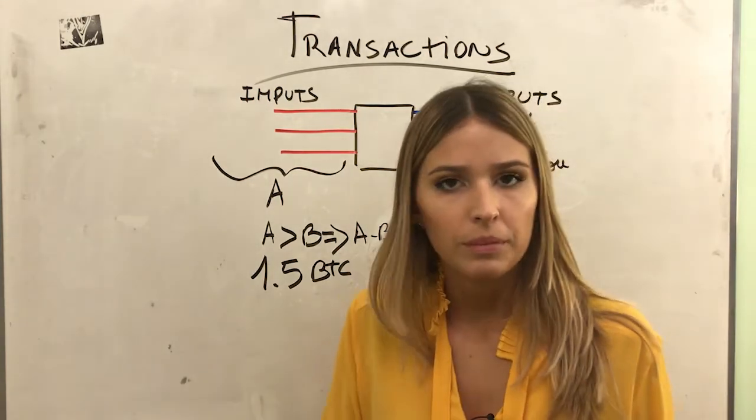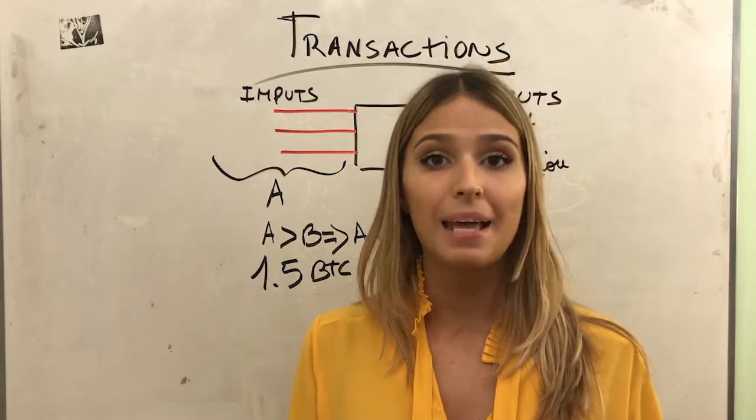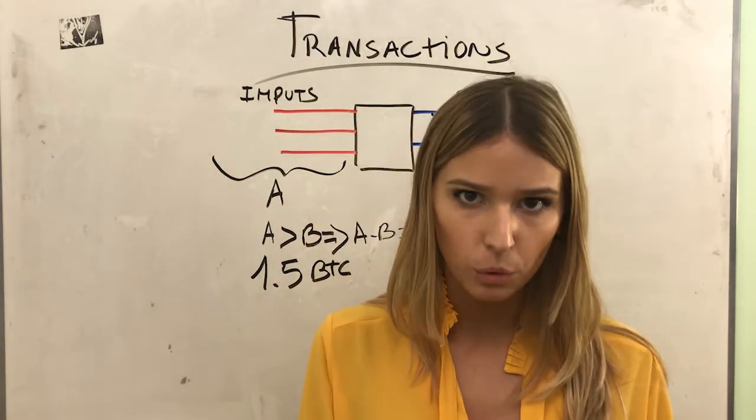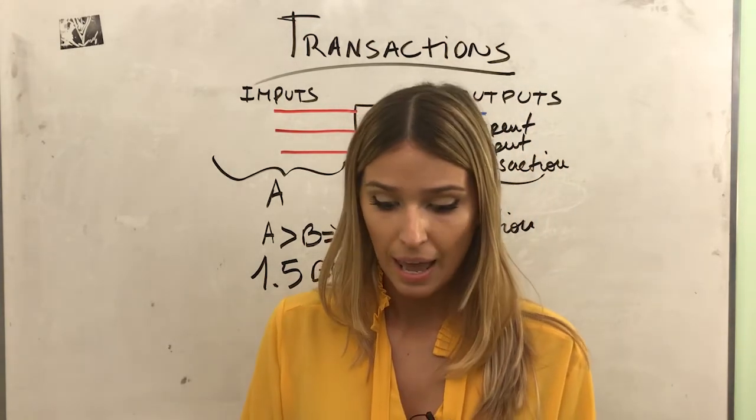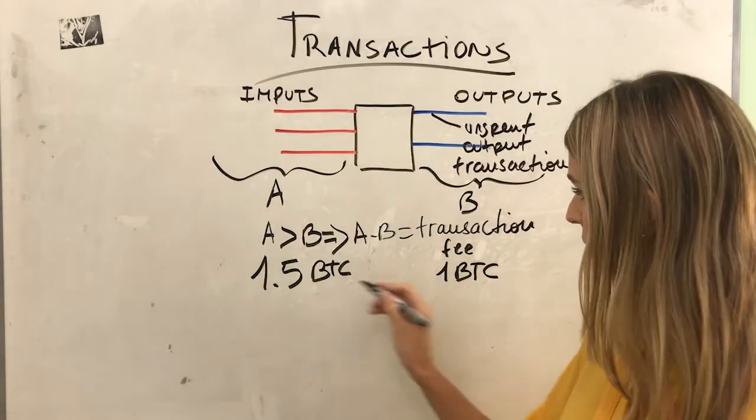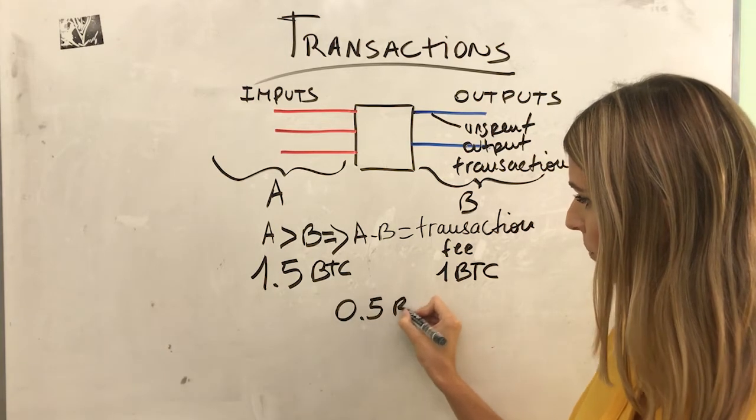One rule: all the inputs have to be spent in one transaction. This is information that not everybody knows. All the inputs have to be spent in one transaction, meaning that the difference here is 0.5 Bitcoin.